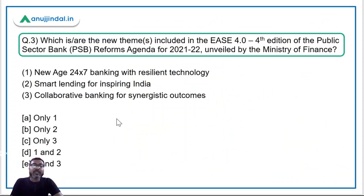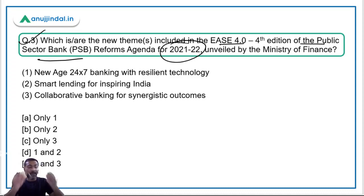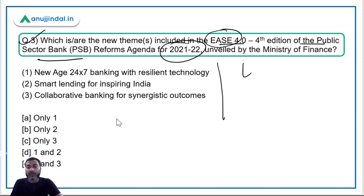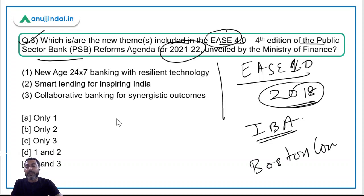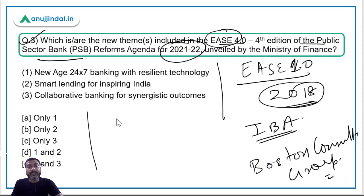Moving to question three: what are the new themes included in EASE 4.0, the fourth edition of the Public Sector Bank reforms agenda for 2021–22, unveiled by the Ministry of Finance? EASE stands for Enhanced Access and Service Excellence. EASE 1.0 was released in 2018 by the Government of India and public sector banks, commissioned through the Indian Banks' Association and authored by Boston Consulting Group.